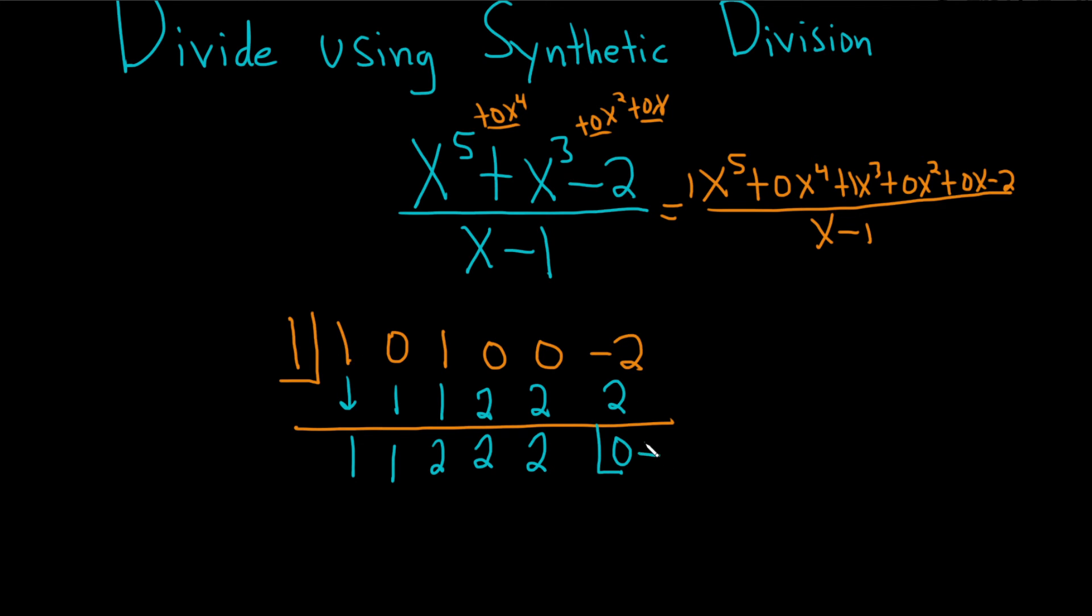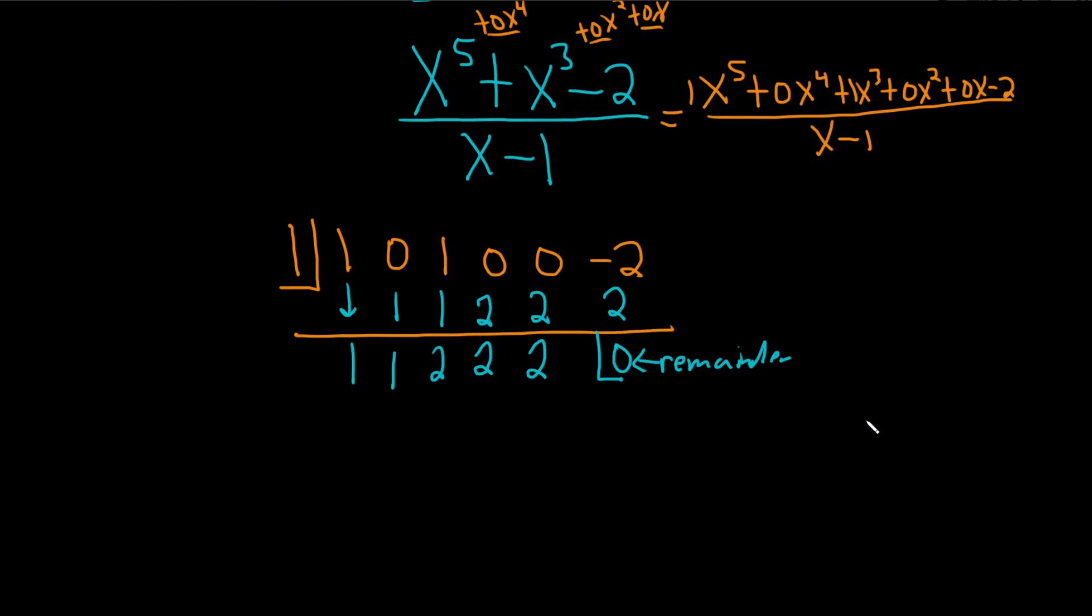This is the remainder. So this is the remainder. And so now we can write the answer down, okay? The answer is going to be, well, let me write this piece down again just to show you. This is x to the fifth plus x cubed minus 2 over x minus 1. This is equal to, so this piece here is going to give us the quotient.